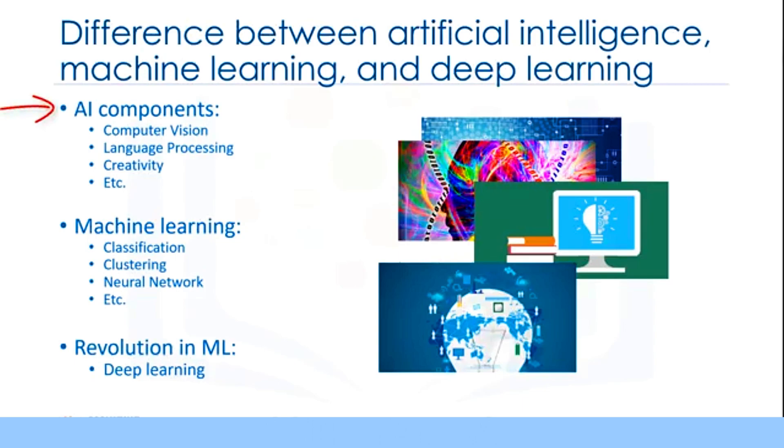In brief, AI tries to make computers intelligent, in order to mimic the cognitive functions of humans. So, artificial intelligence is a general field with a broad scope, including computer vision, language processing, creativity, and summarization. Machine learning is the branch of AI that covers the statistical part of artificial intelligence. It teaches the computer to solve problems by looking at hundreds or thousands of examples, learning from them, and then using that experience to solve the same problem in new situations. And deep learning is a very special field of machine learning, where computers can actually learn and make intelligent decisions on their own. Deep learning involves a deeper level of automation in comparison with most machine learning algorithms.